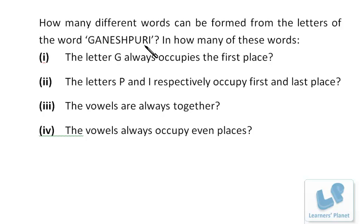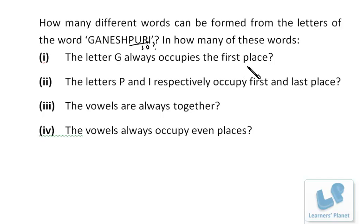Every letter is unique. One, two, three, four, five, six, seven, eight, nine, ten — ten factorial different words can be formed. That is without any condition, so the first answer is 10!. Now the second condition: the letter G always occupies the first place. We have ten places; the first position is fixed for G, so for the remaining nine positions, nine letters are there and they can be arranged in 9! ways.